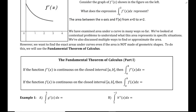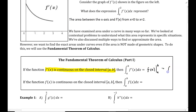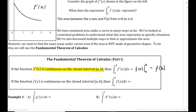Here is what the fundamental theorem of calculus says for evaluating definite integrals: if the function f prime of x is continuous on the closed interval a to b — and that's very important — then the integral from a to b of f prime of x dx equals the antiderivative evaluated at the bounds. Since integrating f prime of x gives f of x, we evaluate f from a to b as f of b minus f of a — the upper limit minus the lower limit.